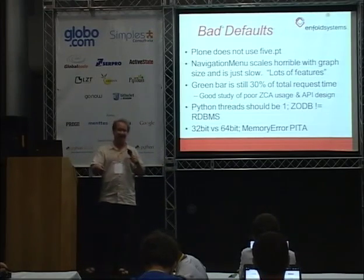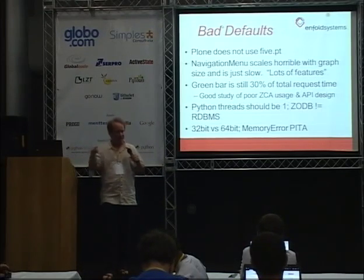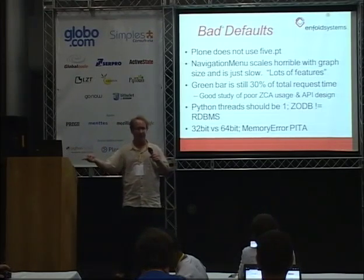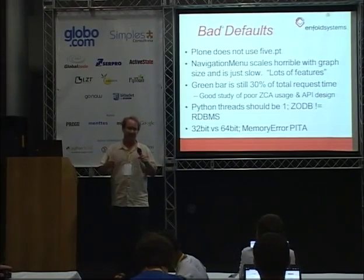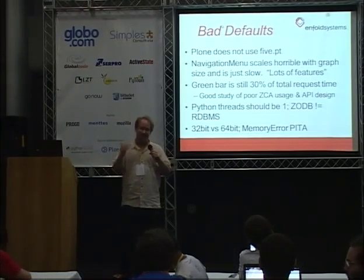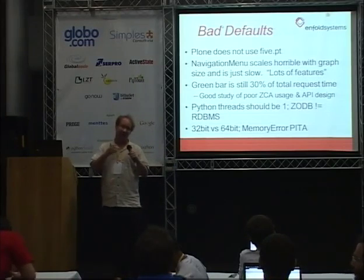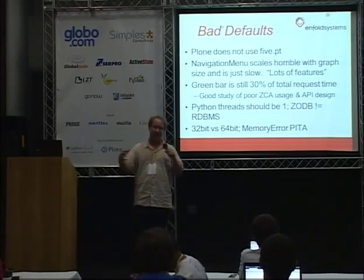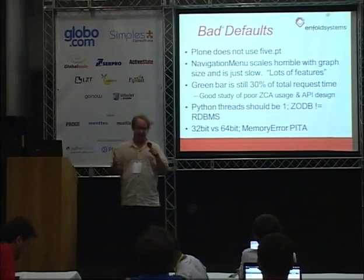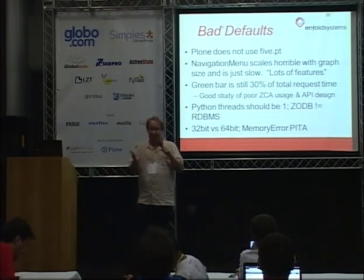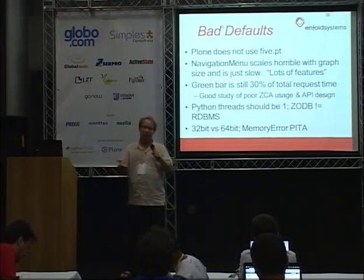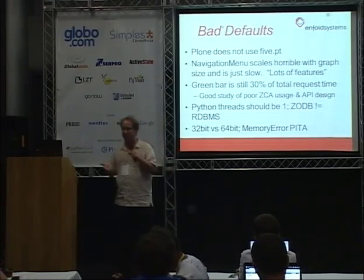Python threads in the ZODB: relational databases are a little different because we're IO-bound. In a fairly well-functioning Zope worker, you're going to be CPU-bound. That's a side effect of the ZODB cache — you're not doing very much IO, and that's a normal application profile in the Plone and Zope world.